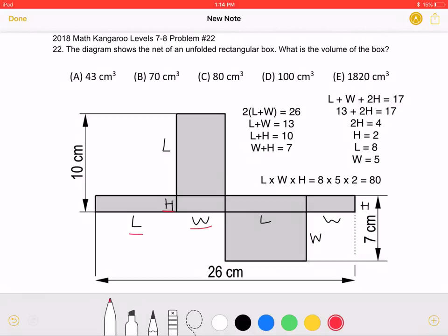As the problem states, the length of this net is 26 cm, and that is from here to here. We can see that this is also equal to twice the sum of L, the length, plus the width. If we divide by 2 on both sides, we will get that the length plus the width must be equal to 13.